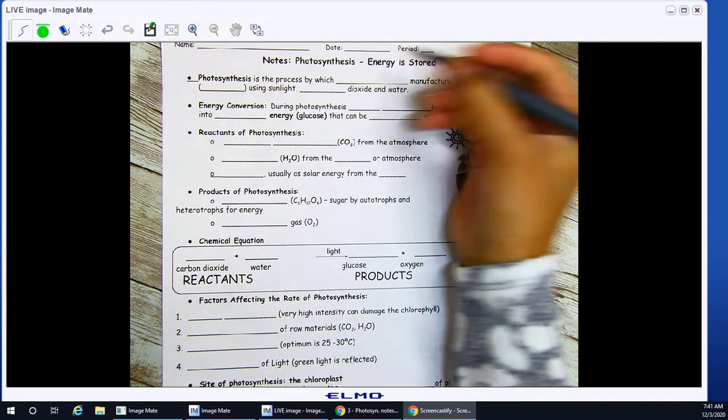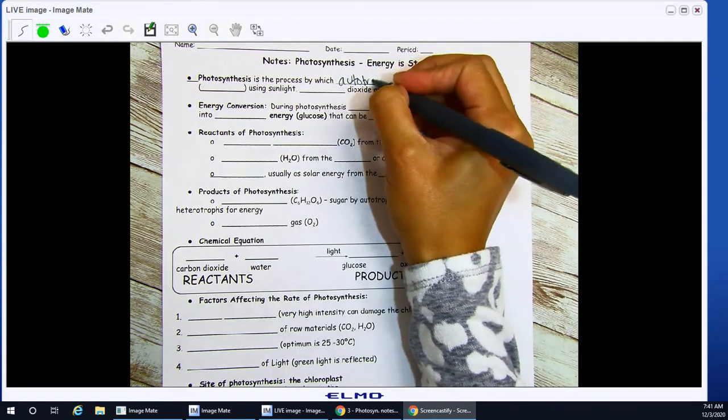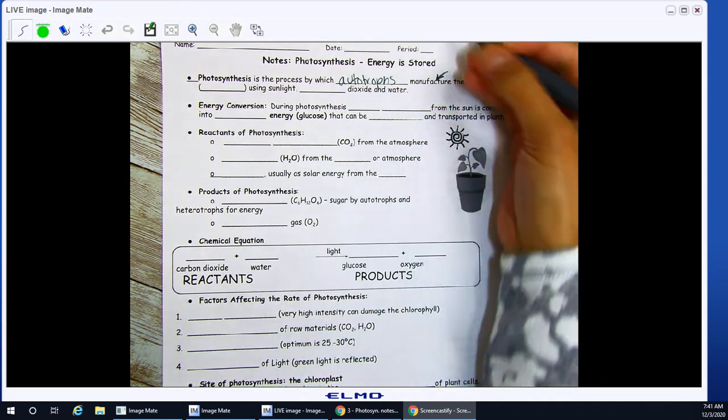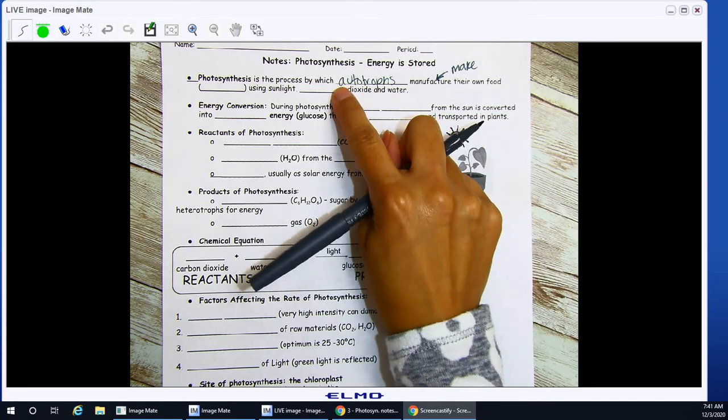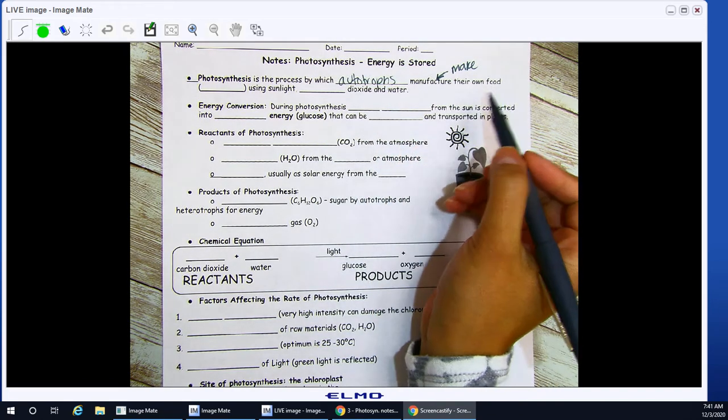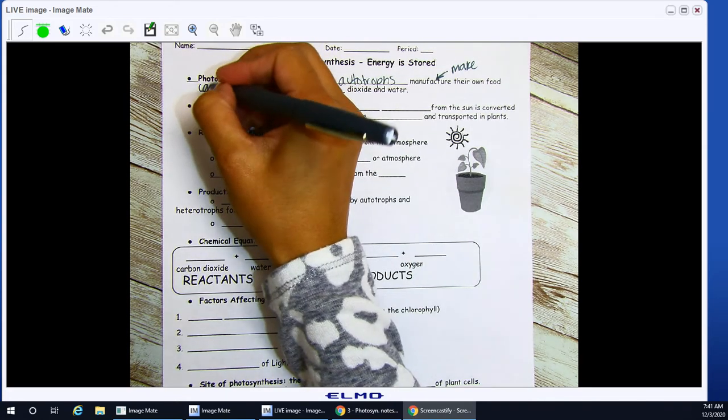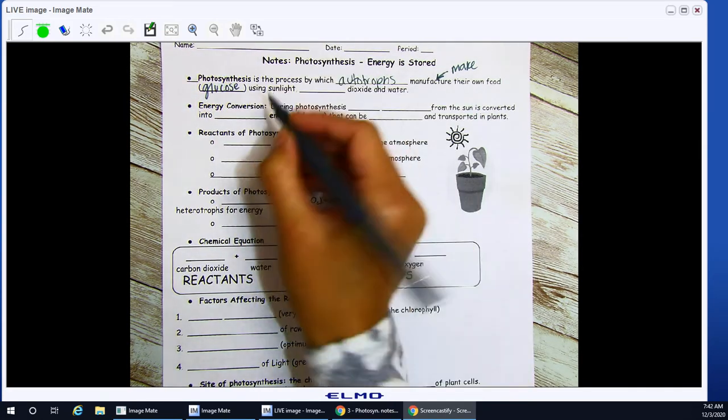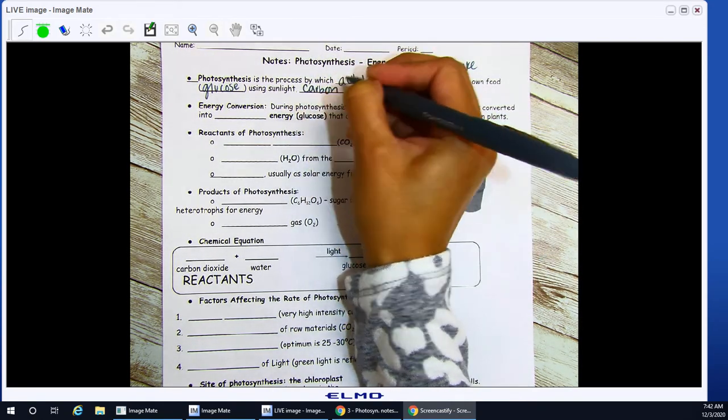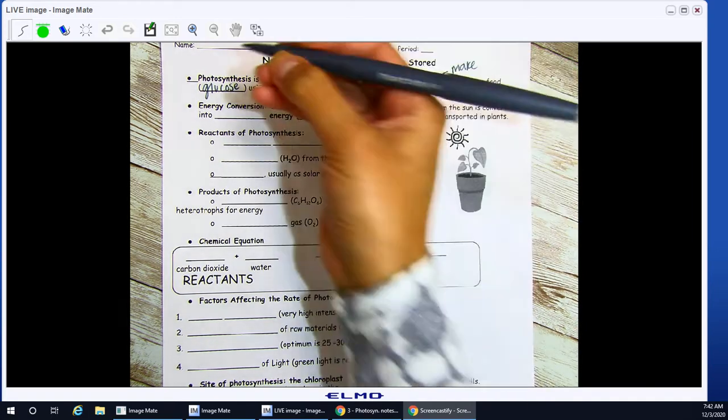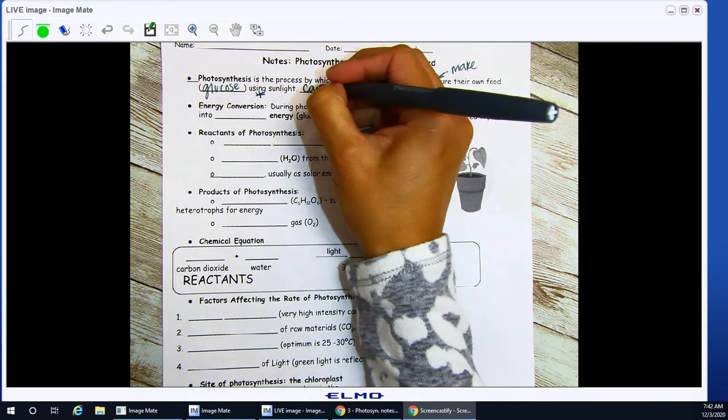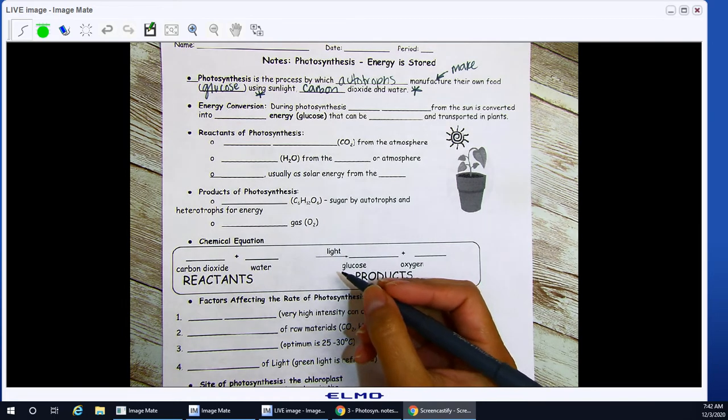Photosynthesis is the process by which autotrophs manufacture their own food. So manufacture means to make. Autotrophs, auto does it by itself. Troph is talking about your food or energy, so it's able to make its own food in the form of glucose. This is sugar, using sunlight, carbon dioxide, and water. I'm going to put a star here because these are the major players in order for your autotroph to perform photosynthesis.